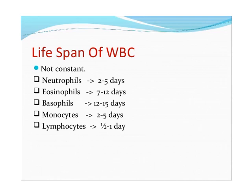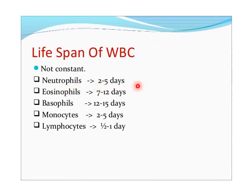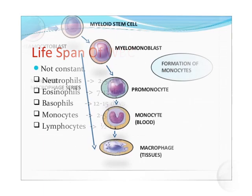Regarding the lifespan of WBCs: neutrophils have a lifespan of 2 to 5 days, eosinophils 7 to 12 days, basophils 12 to 15 days, monocytes 2 to 5 days, and lymphocytes half a day. However, when activated, lymphocytes can survive for years, especially when they mature into memory cells. Neutrophils fight bacteria when activated. Basophils, when they move to tissues, are called mast cells, and monocytes in tissues are called macrophages.